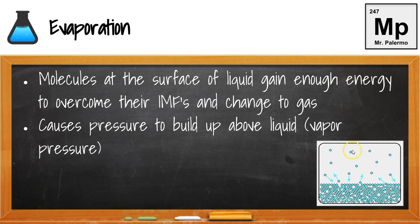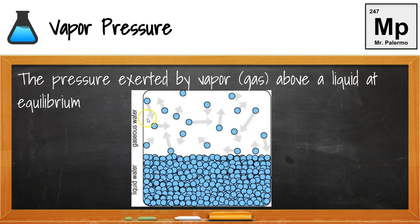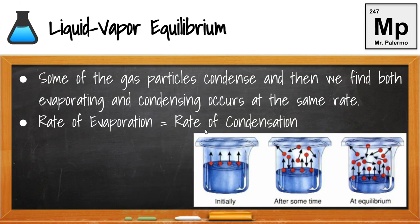As we get more and more gas particles above the liquid, it starts to build up more pressure. This pressure is called vapor pressure — the pressure exerted by the gas or the vapor above the liquid at equilibrium. Equilibrium is when the rates of two opposing things are equal. In this case, the rate of evaporation of our liquid equals the rate of condensation of our gas back to a liquid.